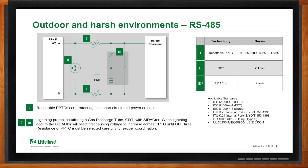For outdoor or harsher environments you'll need more protection. We can still use resettable PPTCs to protect against short circuit and power crosses. For lightning protection, we use a combination of a GDT — gas discharge tube — with a Sedactor. The Sedactor fires quickly, causing more voltage across the PPTC, at which point the GDT fires. It's very important that the resistance of the PPTC be selected carefully for proper coordination with the GDT. Specific products include the TRF, TS, and TSV series for PPTC; the GTC series for GDT; and the P-series for Sedactors.